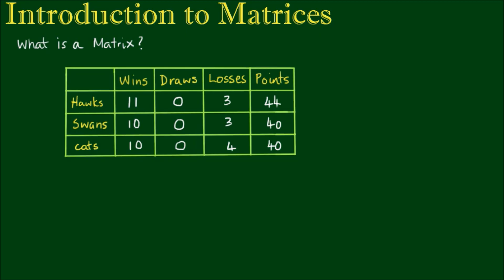We can see here we have the Hawks on 11 wins, 0 draws, 3 losses and 44 points. The Swans on 10 wins, 0 draws, 3 losses and 40 points. And the Cats on 10 wins, 0 draws, 4 losses and a total of 40 competition points.